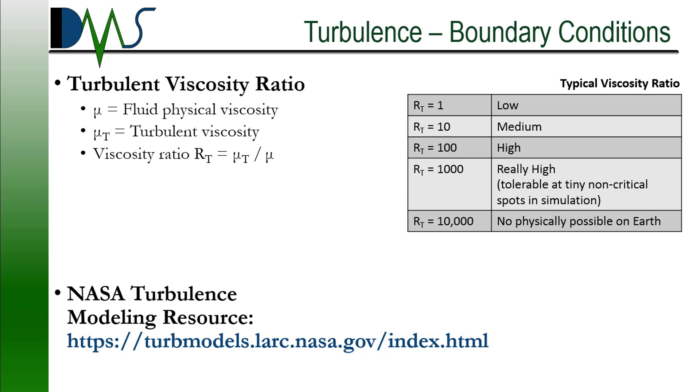A ratio of 1000, that's really, really high. You can see that potentially at some points in your simulation. I have seen that at some cases. I've never set it at boundaries, but it does occur at some points if you have bad meshes. You can tolerate that at non-critical spots in your mesh, and you might accept that just for debugging purposes. But it's definitely a warning sign that you have something bad with your mesh. If you have a viscosity ratio higher than that, of around 10,000, that's not physically possible on Earth. You're definitely going to get your simulation crashing at that point.